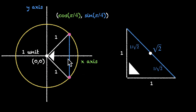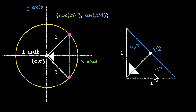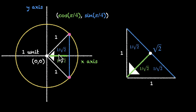We also need the other length, so we join these two points to form another right-angled isosceles triangle with angles 45, 45, and 90. Since this is 1 by root 2, this is also 1 by root 2. This gives us the coordinates of this point. Bringing it back, we can see that this is 1 by root 2 and this is 1 by root 2. Its x-coordinate is 1 by root 2 and its y-coordinate is also 1 by root 2, giving us cos and sine of pi by 4.